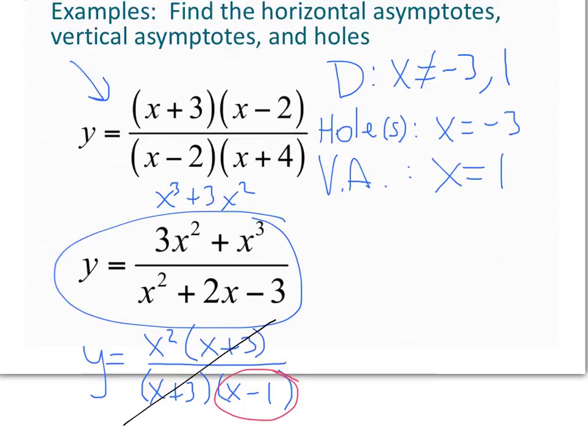And lastly, my horizontal asymptote. To get my horizontal asymptote, I need to look at my degrees. In the numerator, I have x to the third. So my largest degree in the numerator is 3. My degree of the numerator is 3.